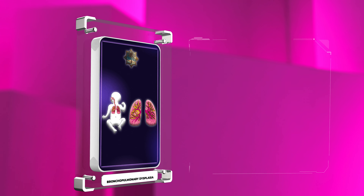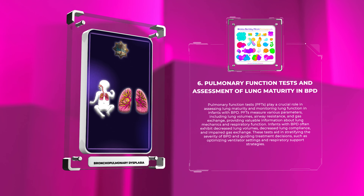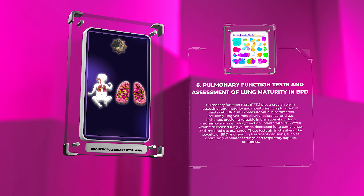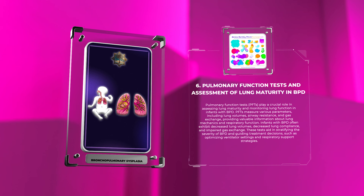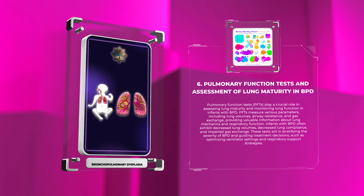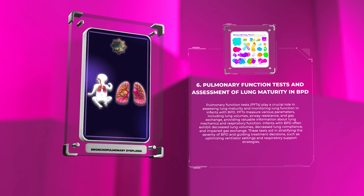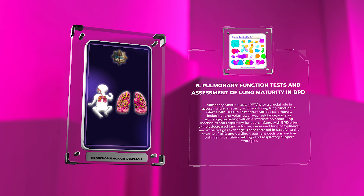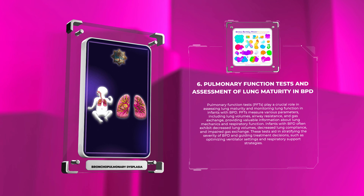Pulmonary function tests (PFTs) play a crucial role in assessing lung maturity and monitoring lung function in infants with BPD. PFTs measure various parameters including lung volumes, airway resistance, and gas exchange, providing valuable information about lung mechanics and respiratory function. Infants with BPD often exhibit decreased lung volumes, decreased lung compliance, and impaired gas exchange. These tests aid in stratifying the severity of BPD and guiding treatment decisions such as optimizing ventilator settings and respiratory support strategies.